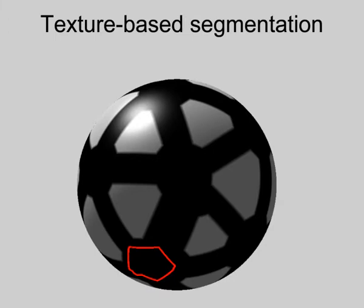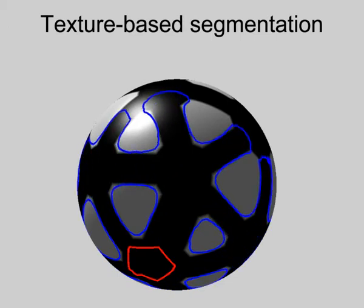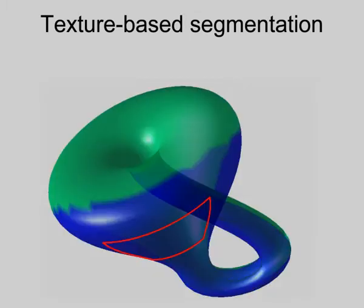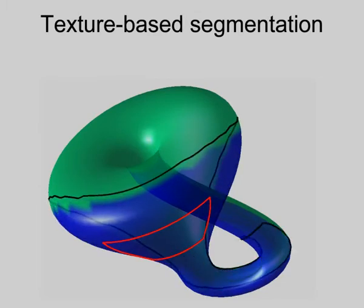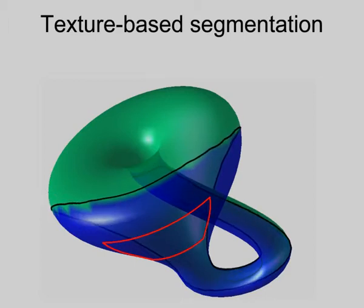Most mesh segmentation algorithms are designed from a purely geometrical viewpoint and perform independently of any overlay texture. However, there are many cases in which the texture can carry additional information. Our algorithm can be used in this case by slightly changing the propagation rule to take color into account, freeing us from the need of an underlying texture image for the segmentation. This example also demonstrates the framework's ability to handle non-orientable models.